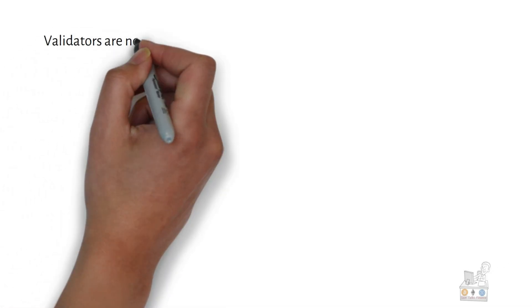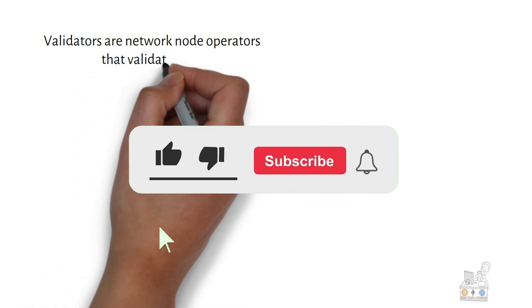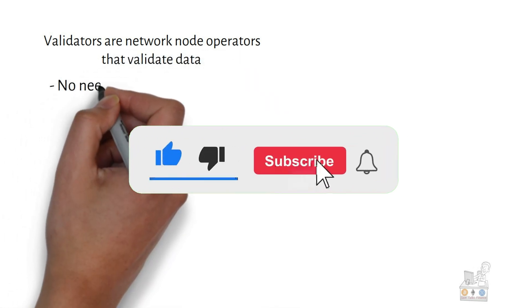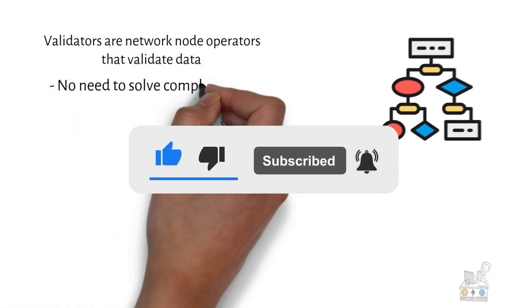The validators in a proof-of-stake system replace miners from proof-of-work systems.